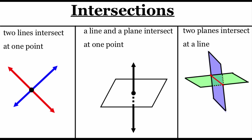The last thing to talk about is the intersection between our objects. Two lines intersect at a single point — shown here with a red and blue line with their intersection highlighted. A line and a plane intersecting happens at exactly one point. Part of the line is shown as dotted because it passes through the plane and part of it is hidden from view. On the far right, two planes intersect at a line — shown with a blue and green plane, with dotted lines for the hidden portion, intersecting at the red line. That's it for this video. Thanks for watching.